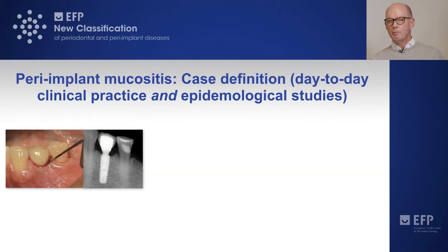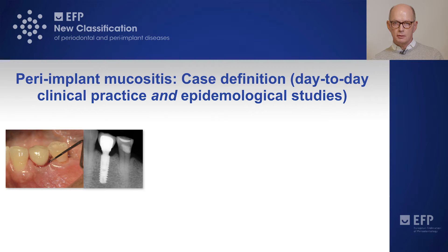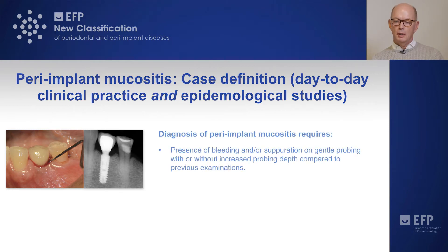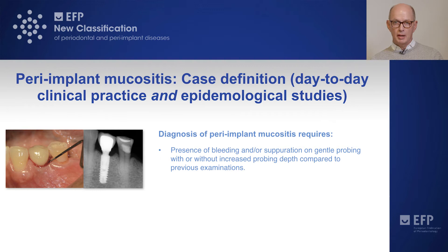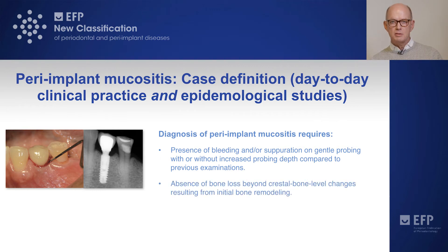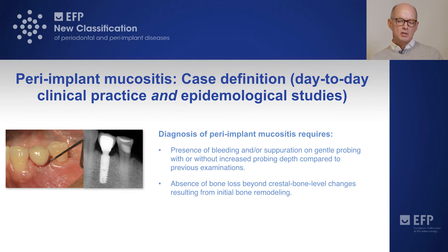The case definition of peri-implant mucositis is straightforward and simple. It includes two aspects. The first is bleeding on probing, with or without increased probing depth as compared to previous examination. The second is absence of bone loss — that is, there should be no bone loss beyond the crestal bone level changes resulting from initial bone remodeling.